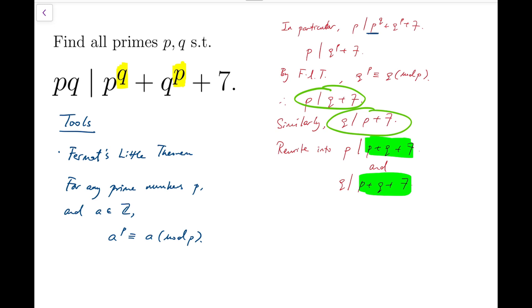Now, because p and q are prime, they are very likely to be coprime. Then, my wishful thinking is that I can say that pq, the product of p and q, divides p plus q plus 7. But we have to first deal with a special case, which is the case when p and q are equal, which means that they are then not coprime.